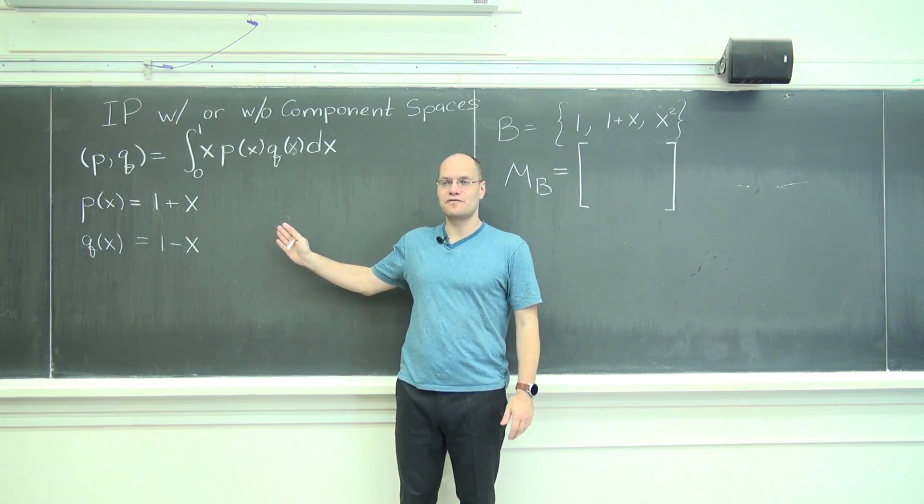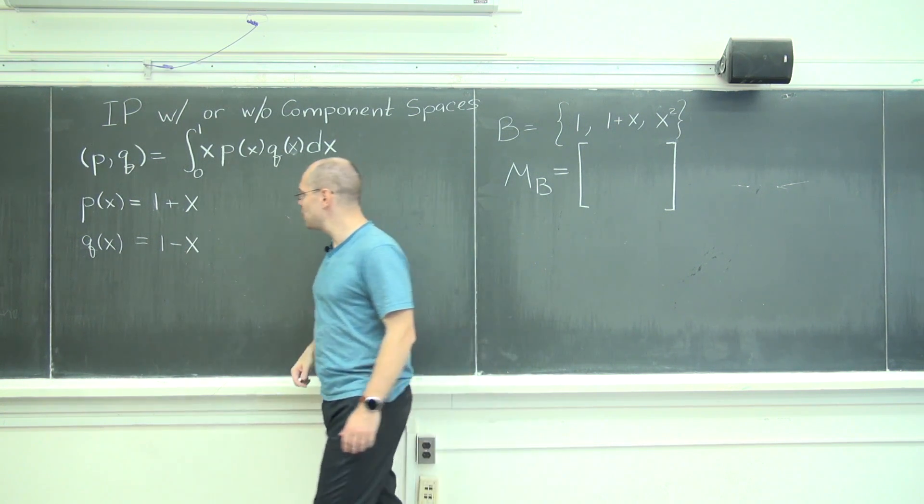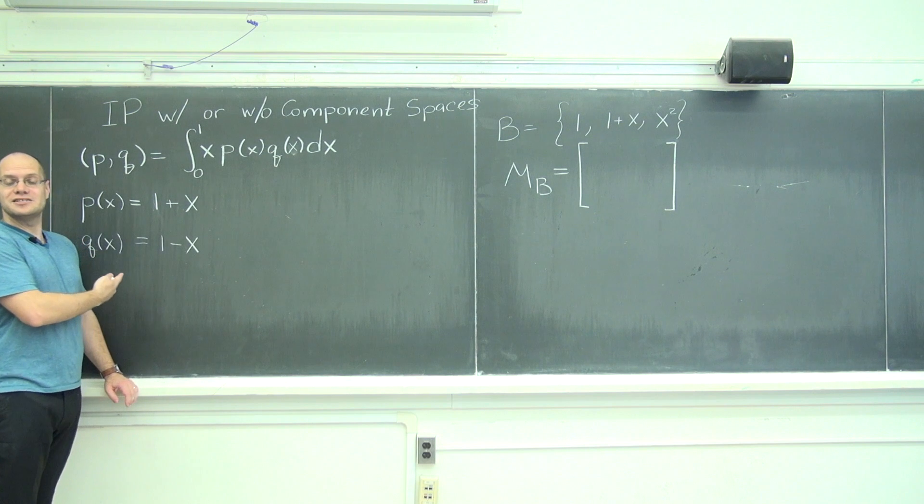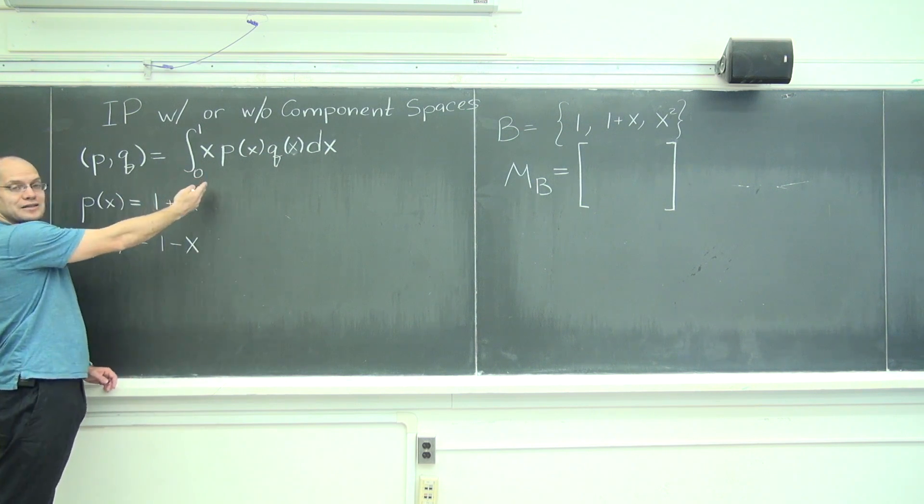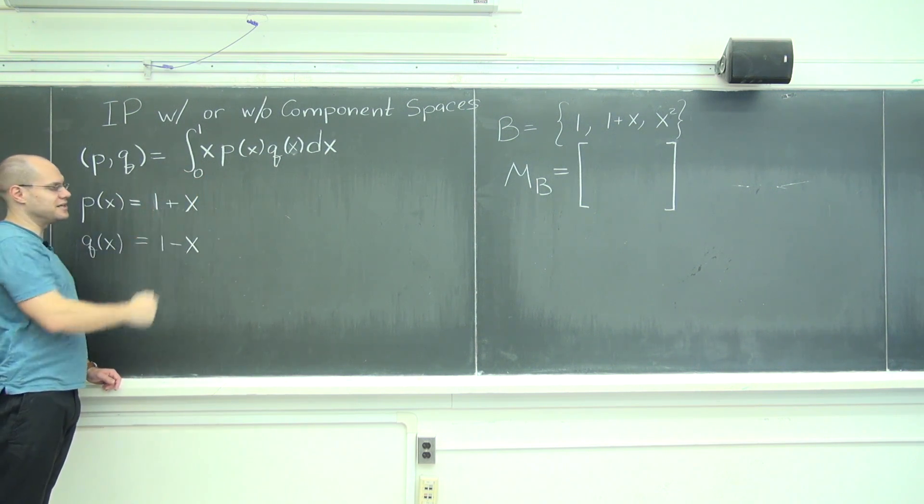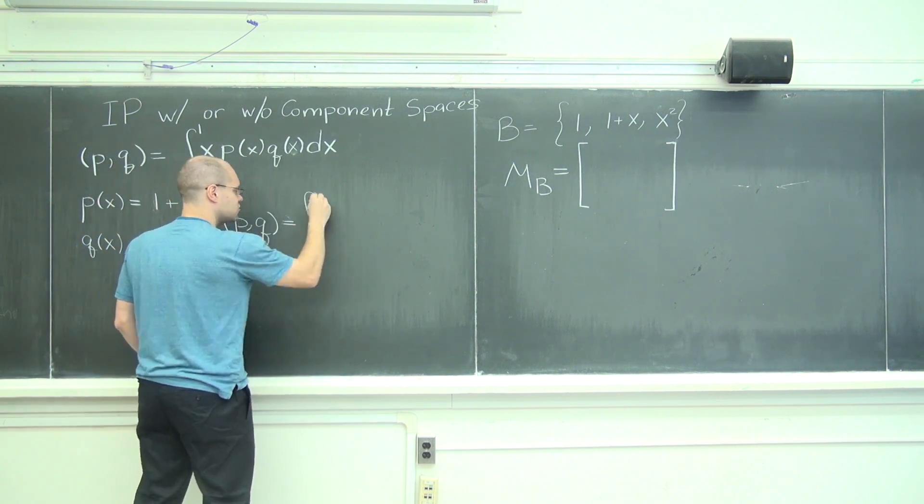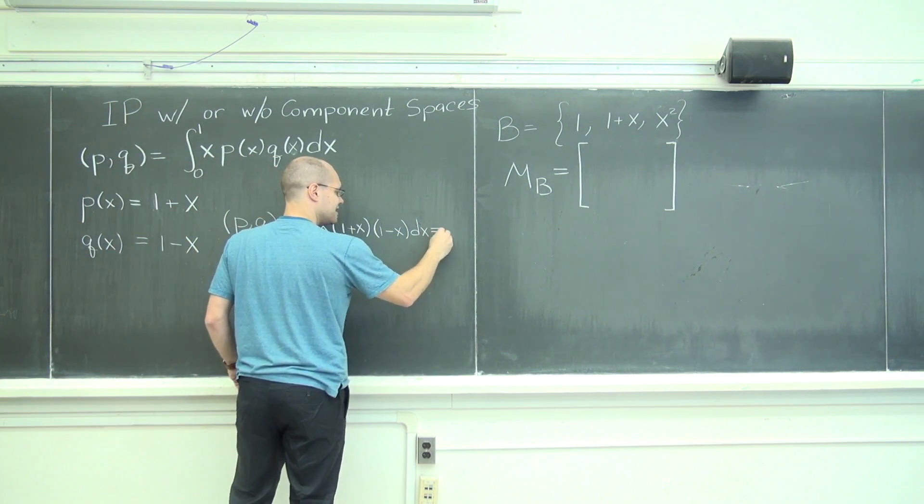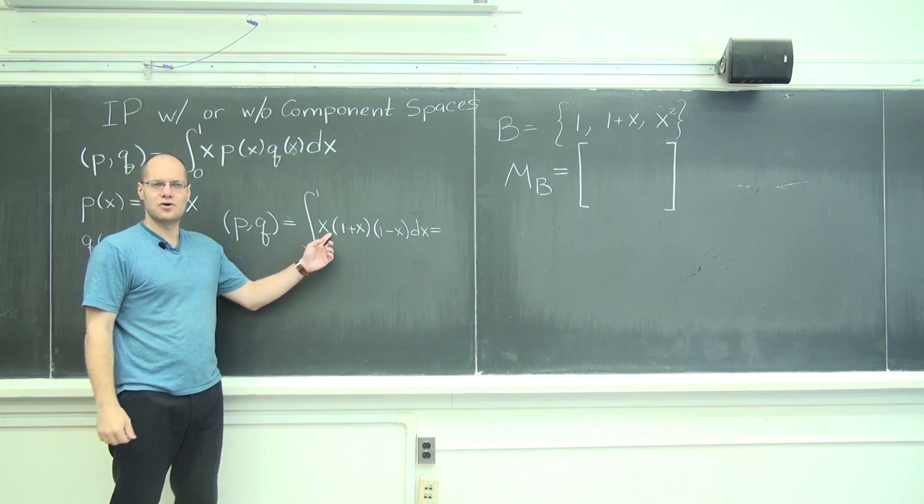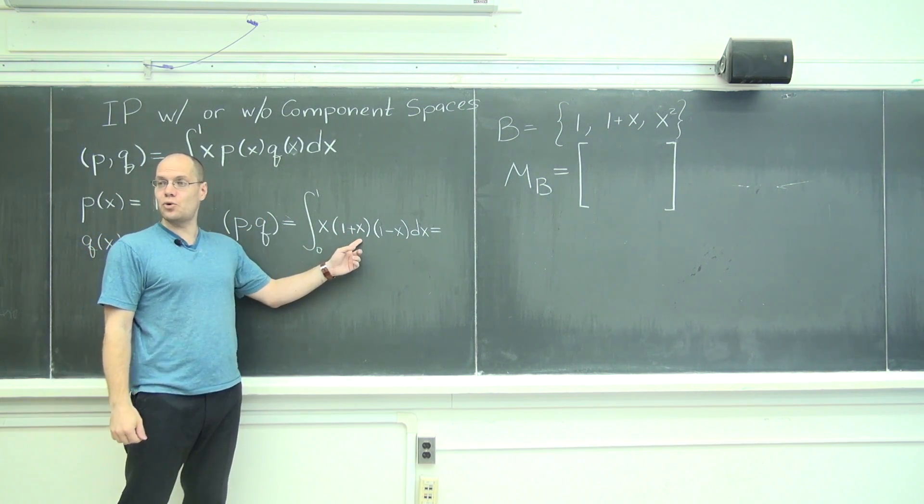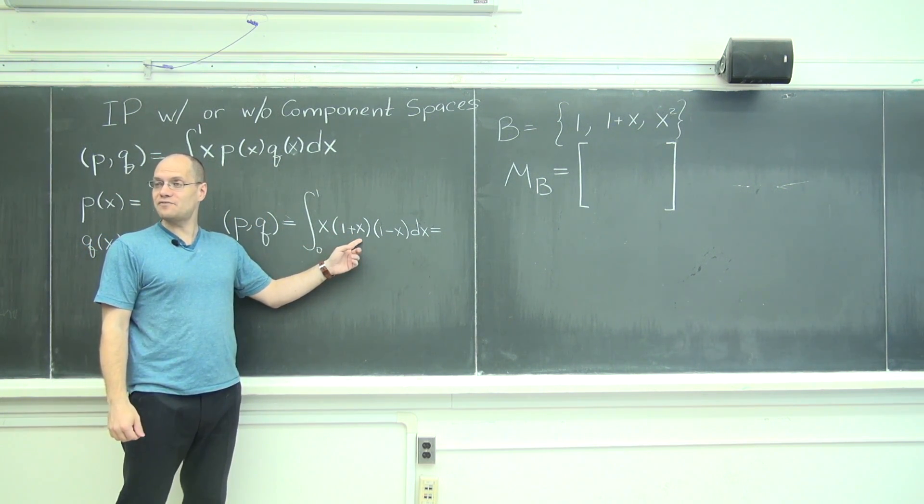Let's go the direct route first. The direct route means doing polynomial things with polynomials. And this is a polynomial sort of thing. Integrate. So the inner product of P and Q. And it equals, I think I could do it in my head. One half plus one quarter.